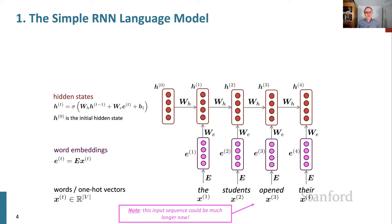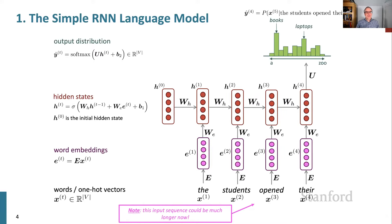We also usually want our recurrent neural networks to produce outputs. At each time step, we're going to generate an output. To do that, we're feeding the hidden layer into a softmax layer — doing another matrix multiply, adding a bias, and putting it through the softmax equation. That gives us the probability distribution over words, and we can use that to predict how likely it is that different words are going to occur next.